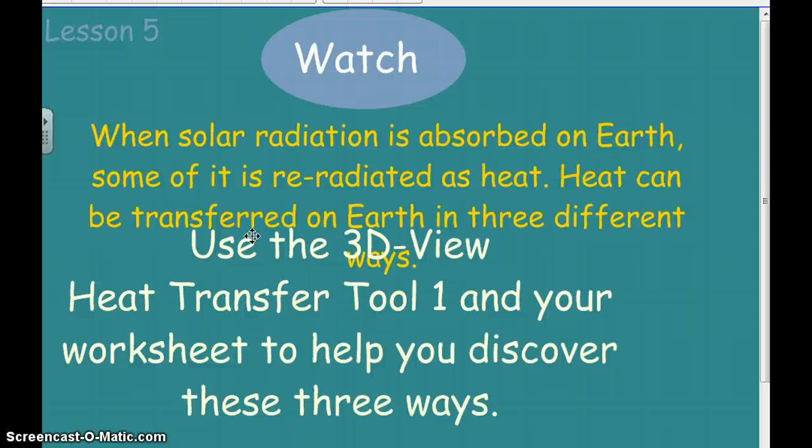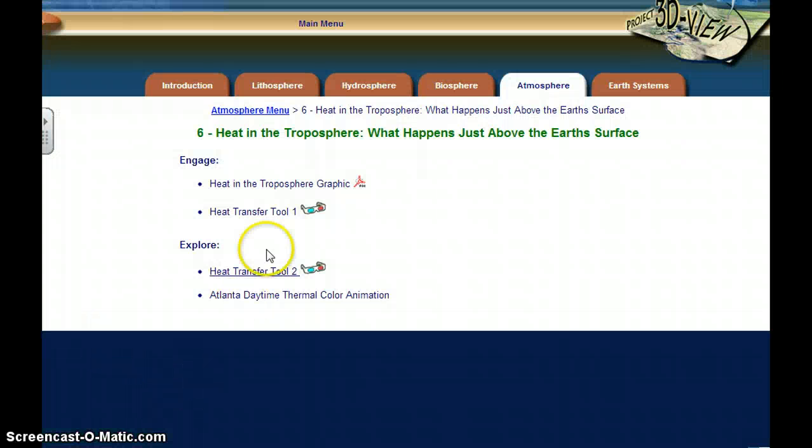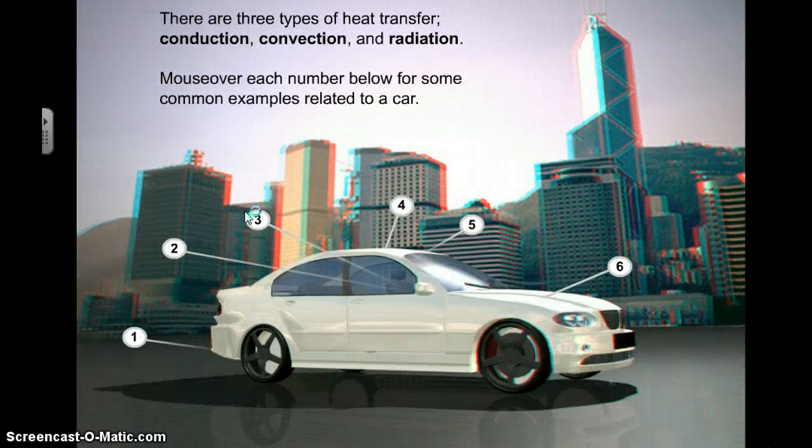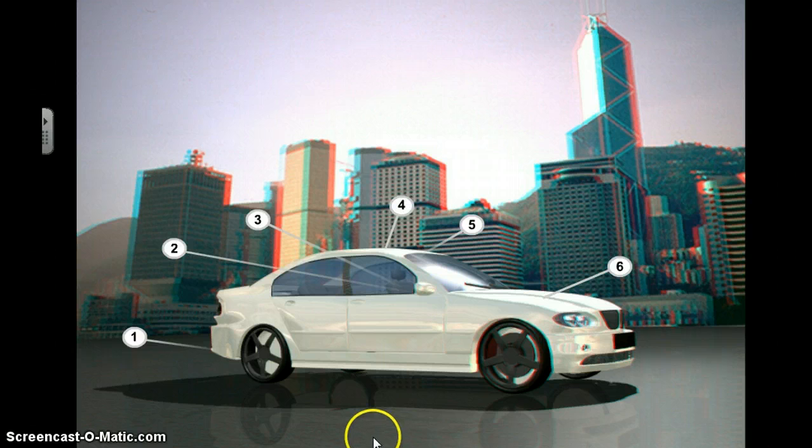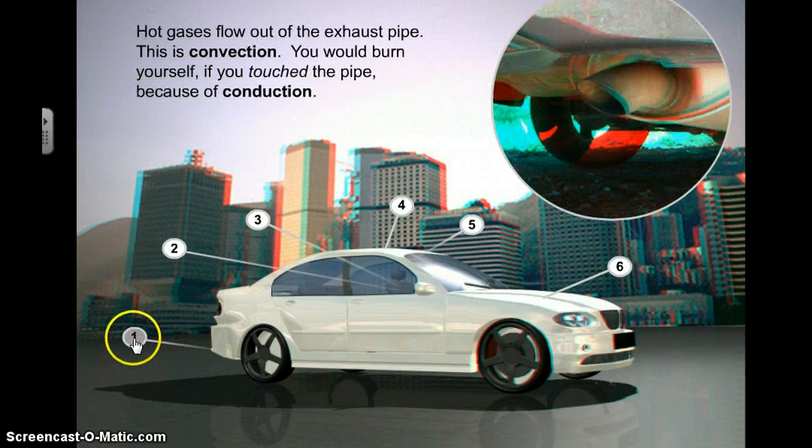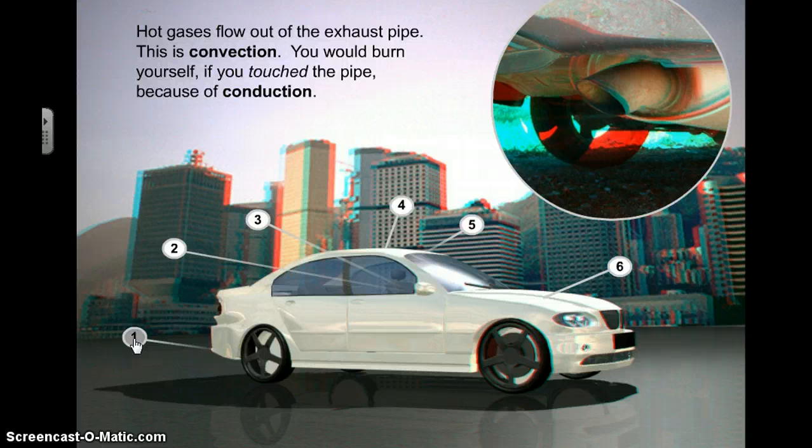It can be transferred in three different ways, and the three different ways are shown right here in a real simple example. The three different ways are convection and conduction, which can be both seen here in a car running with its engine.